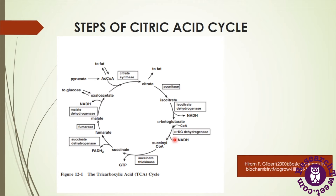Alpha-ketoglutarate converts into succinyl coenzyme A, also releasing a molecule of NADH, catalyzed by alpha-ketoglutarate dehydrogenase. The next step converts succinyl coenzyme A into succinate, releasing GTP (guanosine triphosphate), catalyzed by succinyl thiokinase. After that, succinate converts into fumarate with the help of succinate dehydrogenase, and fumarate is later converted into malate by the enzyme fumarase.